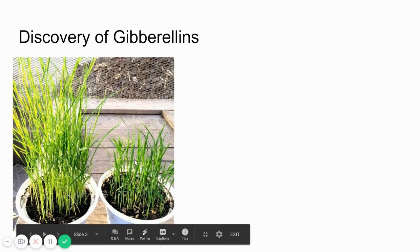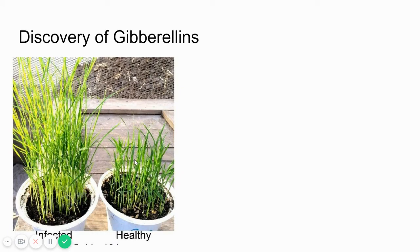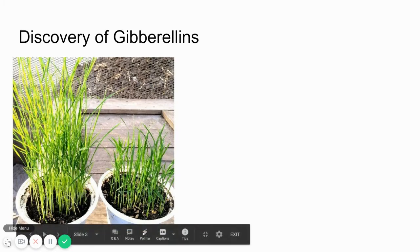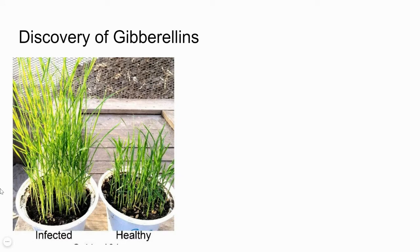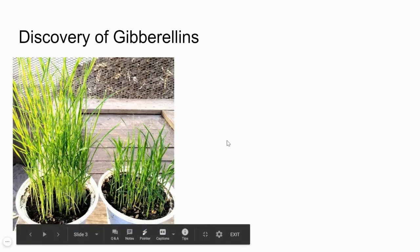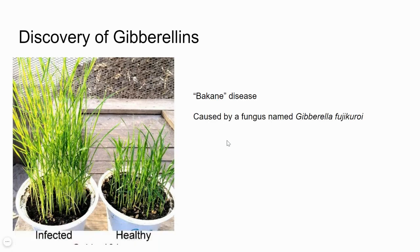Moving on to some background history about gibberellins and how they were discovered. On screen you are looking at two different samples of rice plants. The name 'gibberellin' actually has roots in Japanese history. In Japan, scientists discovered that certain rice plants which were genetically dwarfs, when they got infected by a particular type of fungus, started growing tall and reached a certain height after which the whole seedling used to bend and fall off or become non-harvestable.